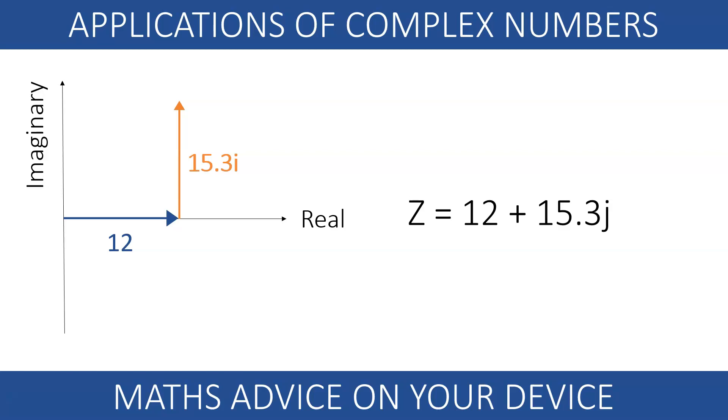Engineers use j instead of the imaginary unit i so they don't mix it with the symbol for the current. The complex number 12 plus 15.3i can be written in polar form.